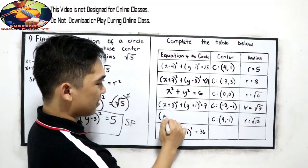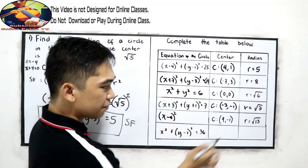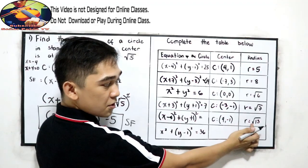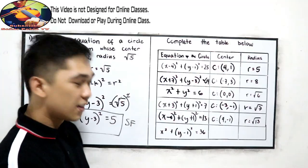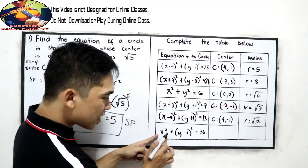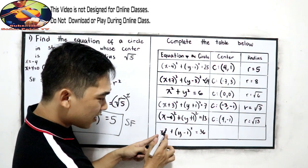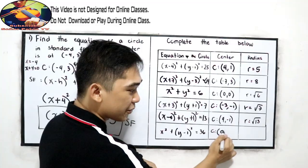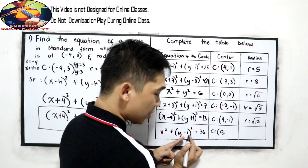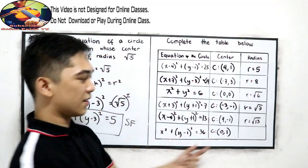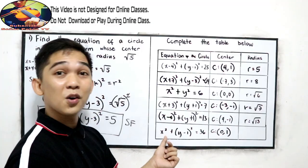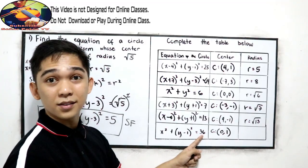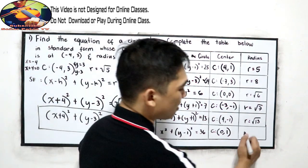Next equation: (x minus 4) squared plus (y plus 1) squared equals (square root of 2) squared, which simplifies to 2. For the last item, notice that x is written as x squared without parentheses, so the center's x-value is 0. The y value, after changing the sign, is positive 1. To get the radius, take the square root of 36, which is positive 6.